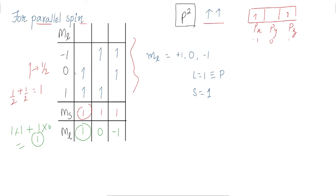In the second combination, we put one electron in the ml=1 and one in the ml=−1 orbital. To calculate ms: half plus half equals one, so ms=1. For ml: 1×1 plus 1×(−1) gives us ml=0. In the third combination, we place the electrons in ml=−1 and ml=0.